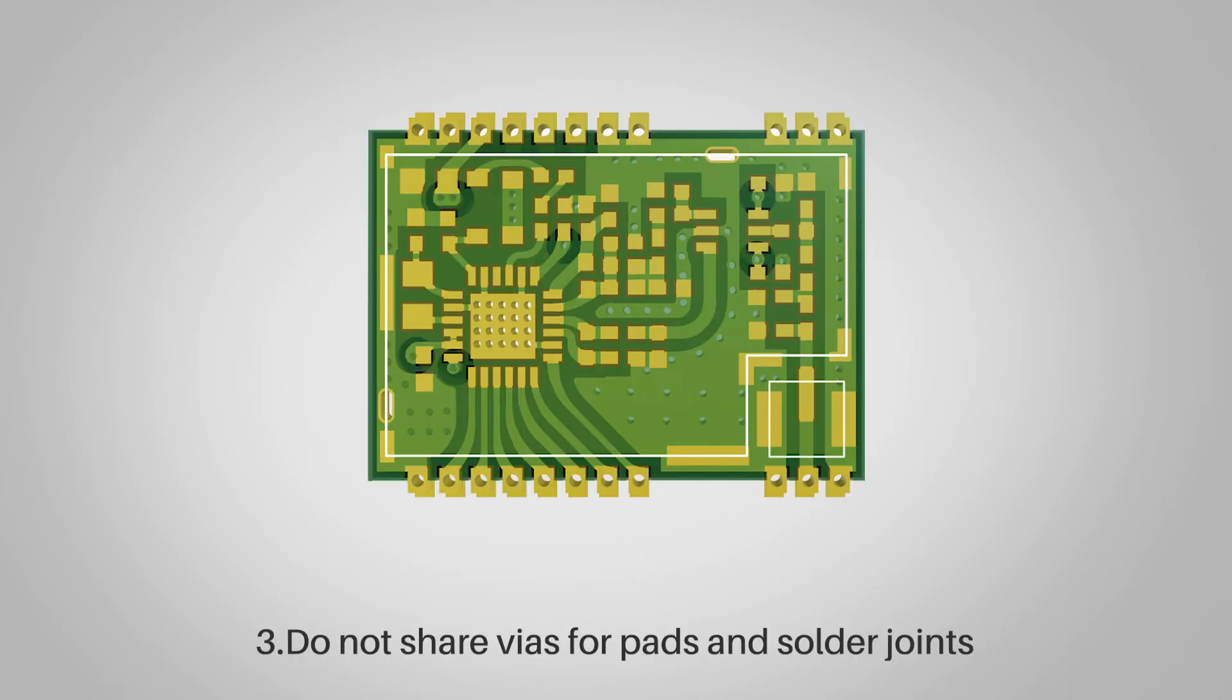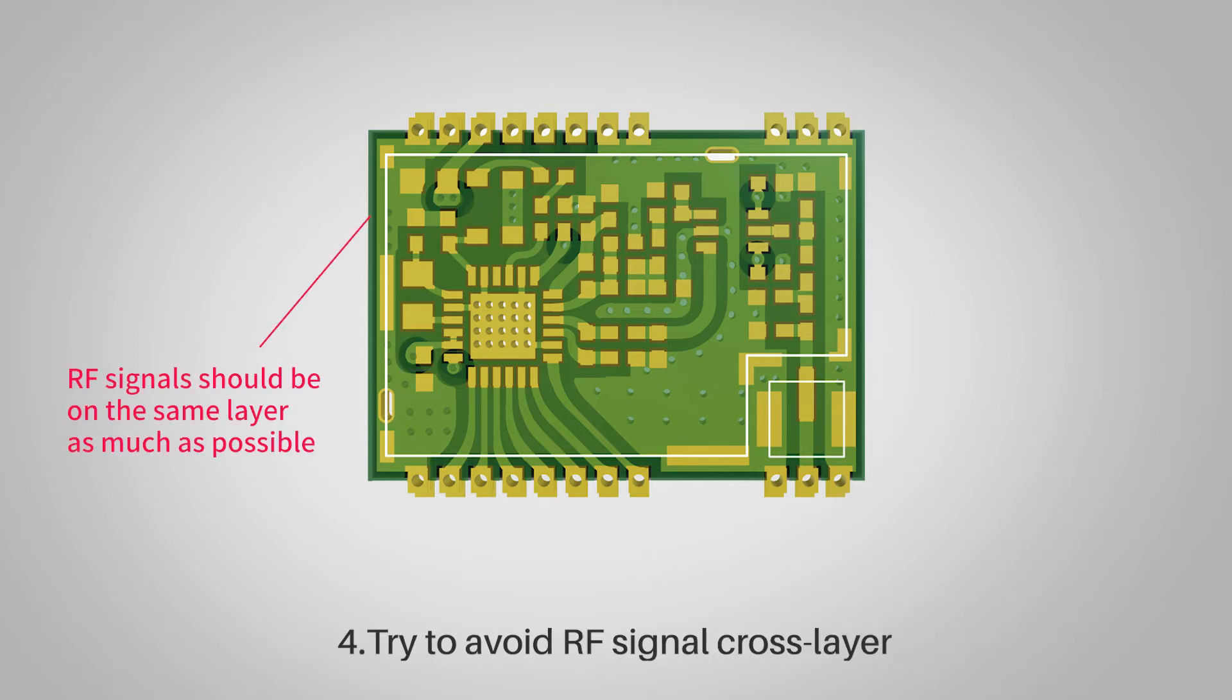Rule three: do not share vias for pads and solder joints, try to be independent. Rule four: try to avoid RF signal cross layer.